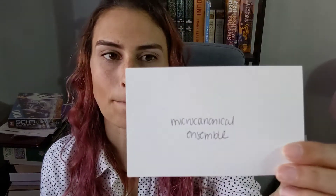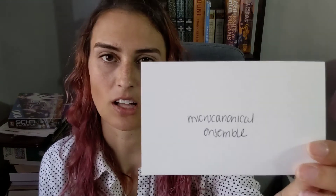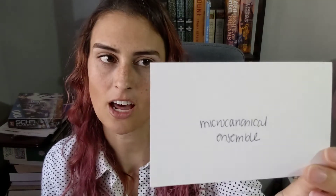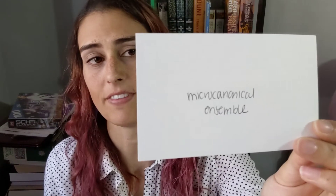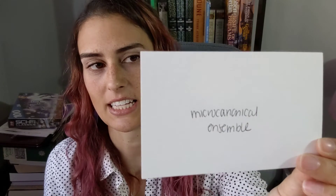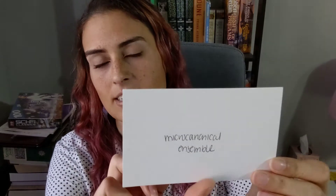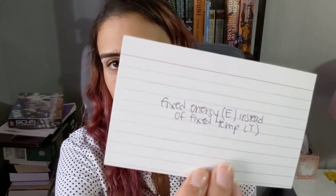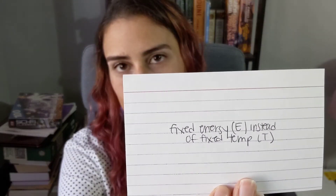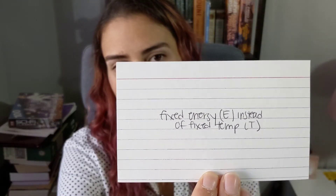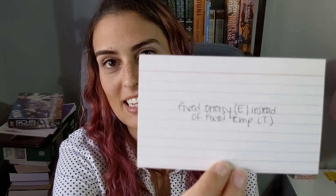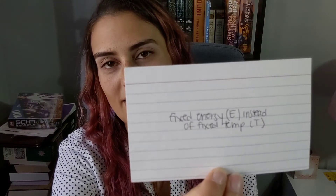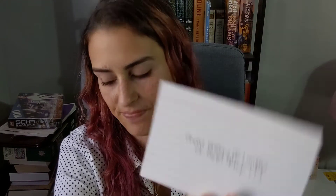The microcanonical ensemble is the same as the canonical ensemble except it's for a fixed energy instead of a fixed temperature — so N, V, and E are fixed instead of N, V, and T.